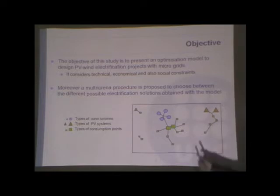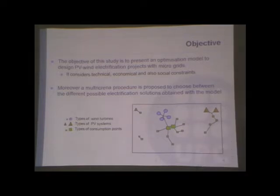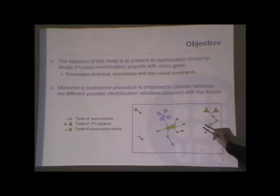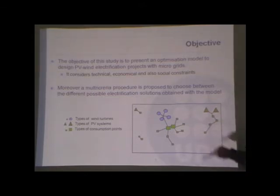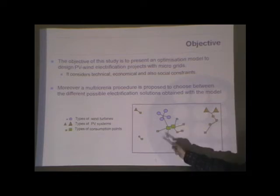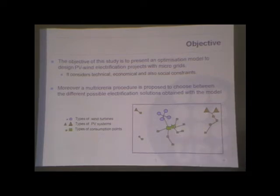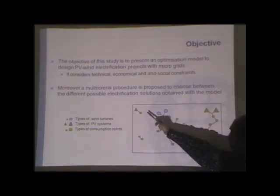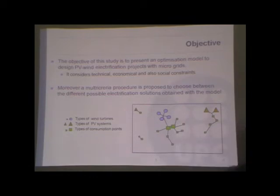An example of a design will be this one. We have two microgrids. These microgrids are energy supplied by two PV generators and this one by four wind turbines. And we have two individual systems.